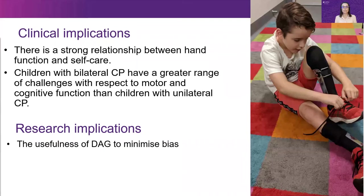This study showed that hand function is a strong determinant of self-care when considered in a holistic framework which considers other environmental and personal factors. Children with bilateral CP have a greater range of challenges with respect to motor and cognitive function compared to children with unilateral CP. Research implications include learning about the usefulness of causal modelling to ensure that bias is minimised when estimating causal effects in analysis.